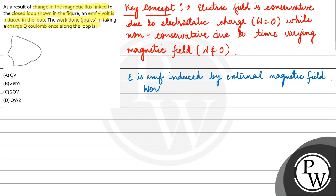Work done moving charge q along the loop will be equal to qE.